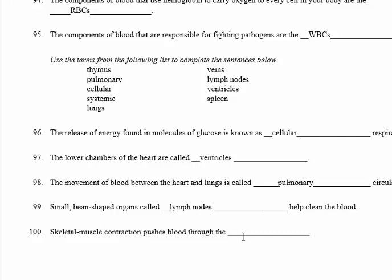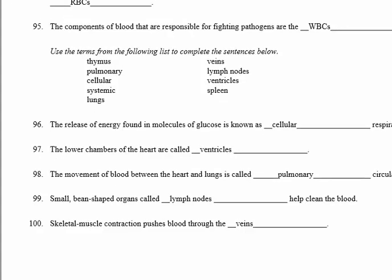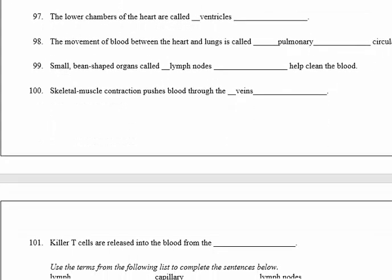Number 100: skeletal muscle contraction pushes blood through the veins, because muscles around the veins ensure blood flows through them, and valves prevent the return of this blood.